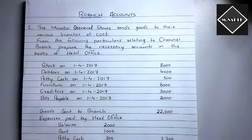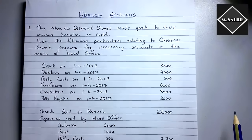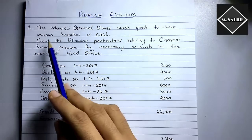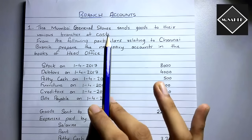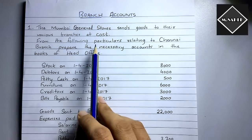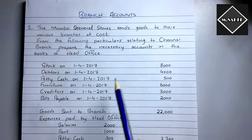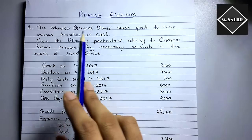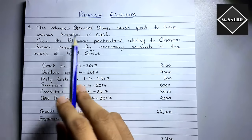Let's go through the question and then we'll solve the branch account. The Mumbai General Store sends goods to their various branches at cost price — so this problem is based on cost price. From the following particulars relating to the Chennai branch, prepare the necessary accounts in the books of the head office. So the branch is in Chennai and the head office is in Mumbai.